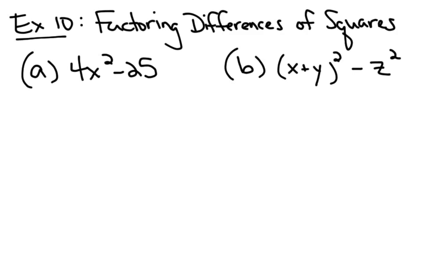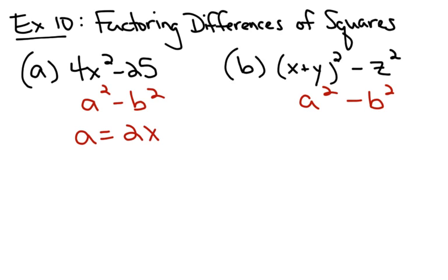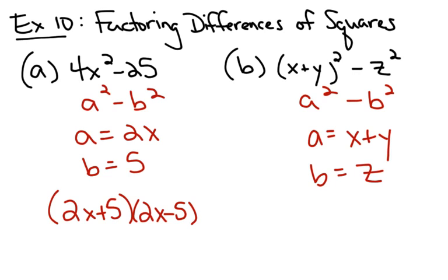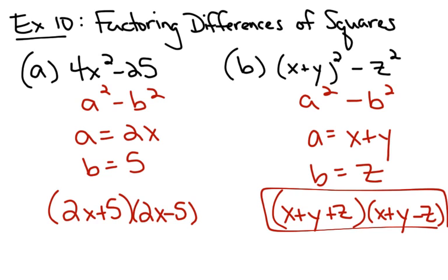So let's factor differences of squares. This is in the form a squared minus b squared, where a is 2x and b is 5 — because when you have squares, to find a and b you take the square root of each term. So this would be 2x plus 5, 2x minus 5 in factored form. In part b, a would be x plus y and b would be z, so in factored form it would be x plus y plus z, x plus y minus z.